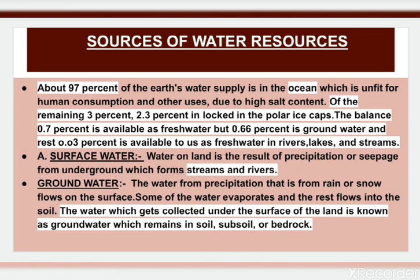About 97% of the earth's water supply is in the ocean, which is unfit for human consumption and other uses, due to its high salt content. Of the remaining 3%, 2.3% is locked in the polar ice caps. The balance, that is 0.7%, is available as fresh water, but 0.66% is ground water and the rest 0.03% is available to us as fresh water in rivers, lakes and streams.